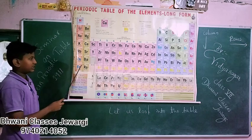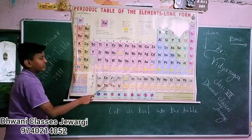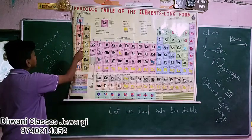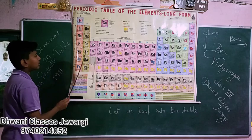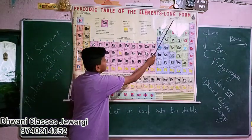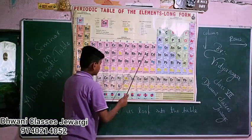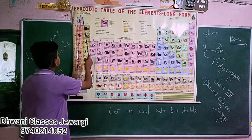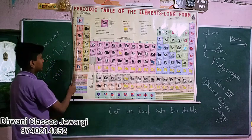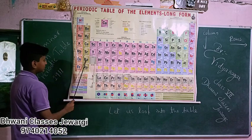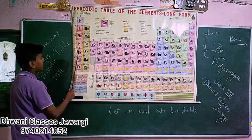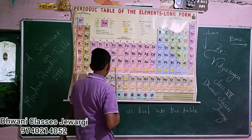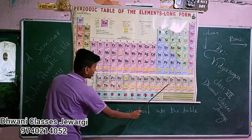The table is classified into 4 types. They are S block, P block, F block, and D block. These are the S block elements. These are the P block elements. These are the F block elements.